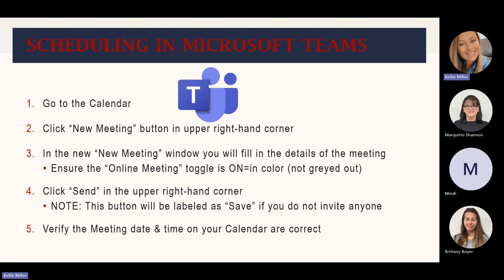So what we're going to start with is Teams and scheduling a meeting in Microsoft Teams. These are just the steps we're going to go through, and then I'm going to have pictures of everything. Again, this is in the app of Microsoft Teams. First, you're going to want to go to the calendar, then click new meeting — that's a button in the upper right-hand corner. In the new meeting window that pops up, you'll fill in the details of the meeting. Make sure the online meeting toggle is on, meaning it's in color and not grayed out. Once you've filled in all the information, you'll click send in the upper right-hand corner. That's whenever you're putting invitations to people in there. If you do not put invitations to anyone, there will not be a send button — instead, the send button will say saved.